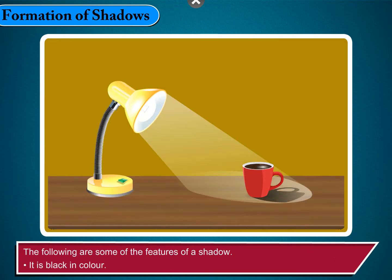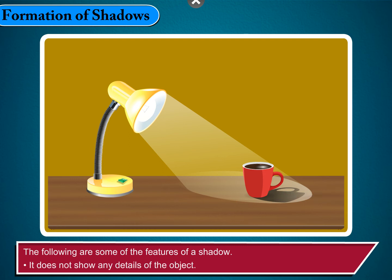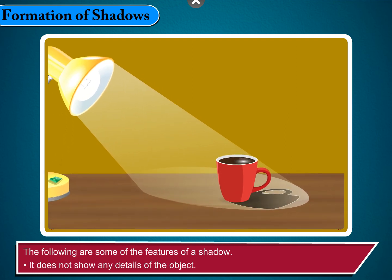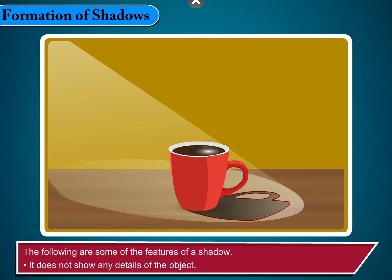The following are some of the features of a shadow. It is black in color. It gives an idea of the shape of the object. It does not show any details of the object, and it does not show the color of the object.